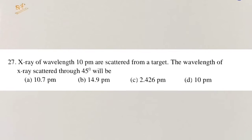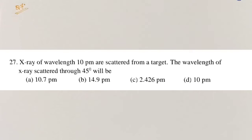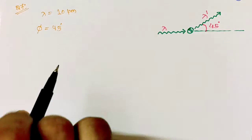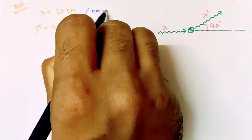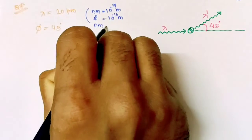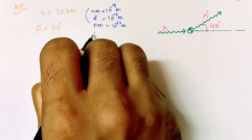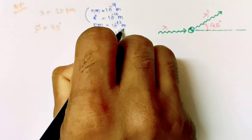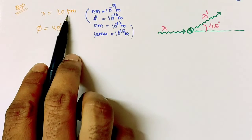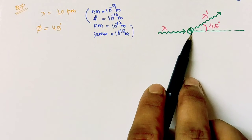Question number 27: X-rays of wavelength 10 picometer are scattered from a target. The wavelength of X-rays scattered through angle 45 degrees will be. We have an X-ray of wavelength 10 picometer. Recall: nanometer is 10⁻⁹ m, angstrom is 10⁻¹⁰ m, picometer is 10⁻¹² m, and femtometer is 10⁻¹⁵ m. This X-ray of wavelength 10 picometer is scattered from a target at 45 degrees.